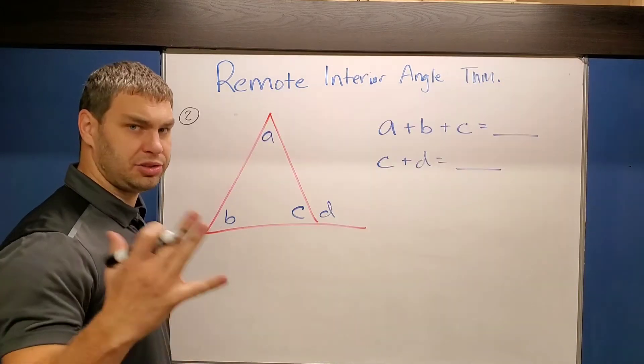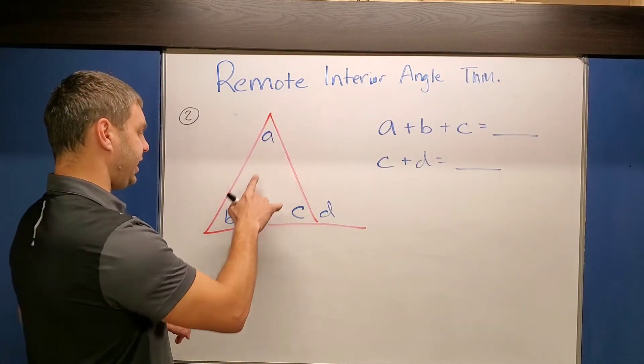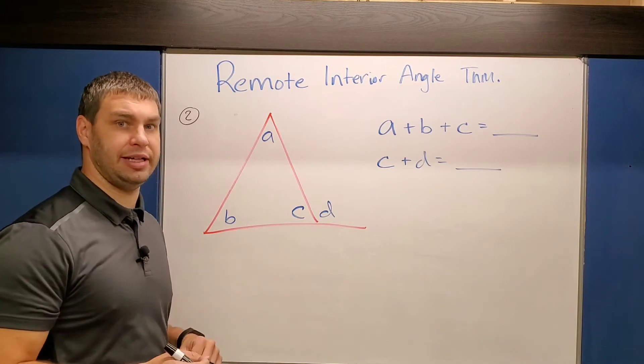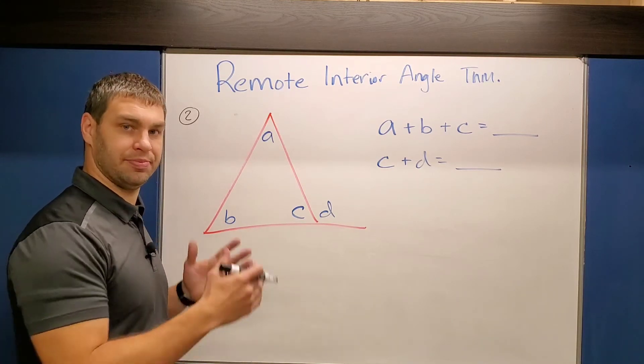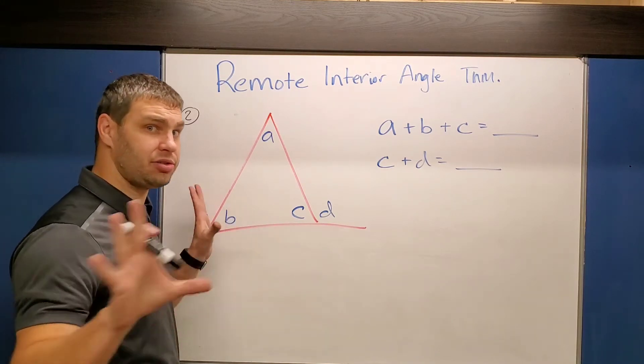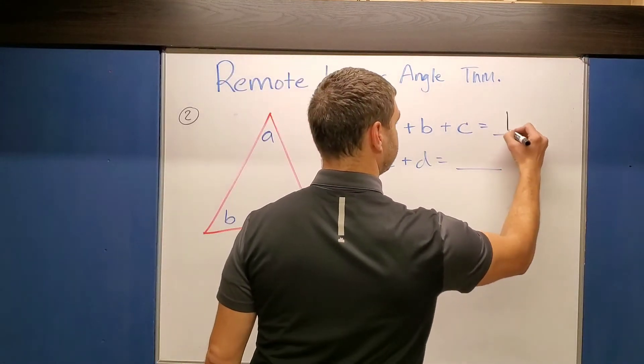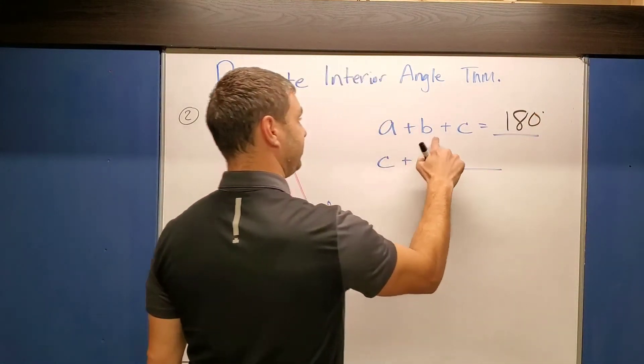All right, so why does this work? Let's check it out. So this works because if I take a plus b plus c, my three interior angles, that's just a triangle sum theorem. Any three angles on the inside of any triangle have to add up to be 180 degrees. All right, so I'll put 180 over here for a plus b plus c.